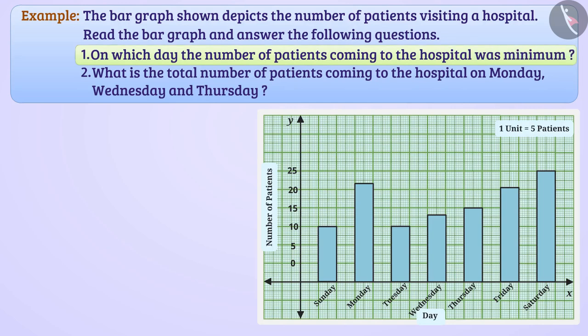The number of patients coming to the hospital on different days are indicated as the length of the bar in the graph. In this way, the bar which has the shortest length will give us the answer to this question. We see that length of bars showing the number of patients on Sunday and Tuesday is same and is smaller than length of all other bars.